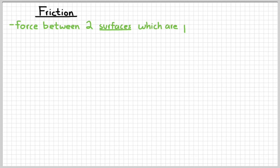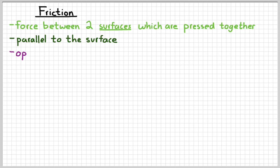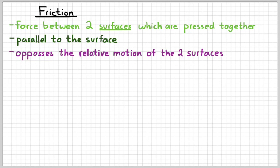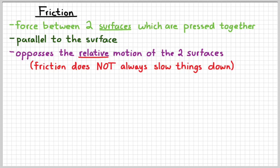Friction is a force that exists between two surfaces which are pressed together. They actually have to be in contact and there has to be force pushing the surfaces together. Friction is always parallel to the surface and it opposes the relative motion between the two surfaces. Note that the key word there is relative — friction does not always slow things down. There are lots of situations where friction is what speeds things up. Friction opposes the motion of the two surfaces, not necessarily the motion of the object.